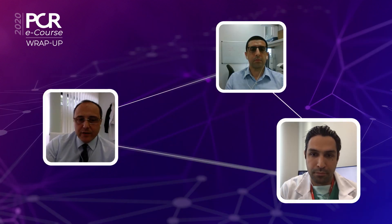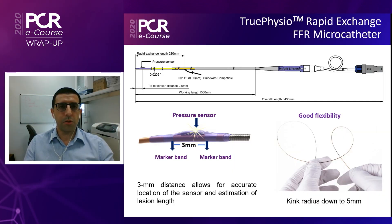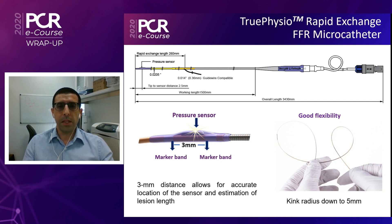We also have a new device — the True Physio FFR microcatheter. The pressure sensor is located between two radiopaque markers, which are easy to locate on angiography during pressure measurement. It has a small profile to minimize problems in tortuous vessels, and a short distal blind section with a distance from the tip to the sensor of 2.5 millimeters. The microcatheter also has good flexibility and pushability, which are important features when dealing with tortuous vessels or when making post-PCI measurements, where you need to pass through a recently implanted stent.